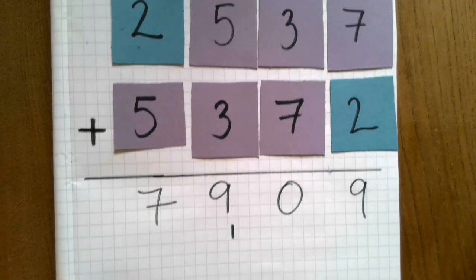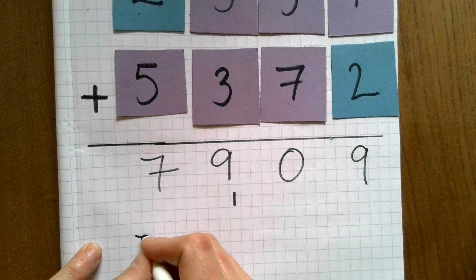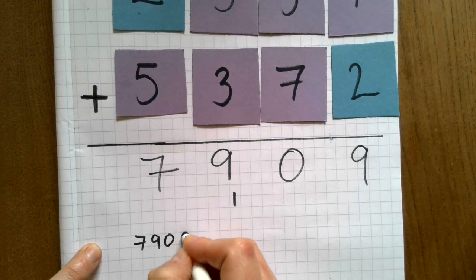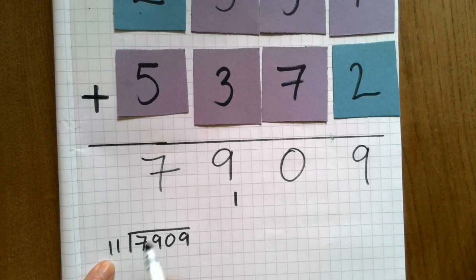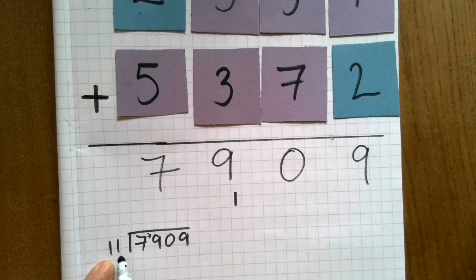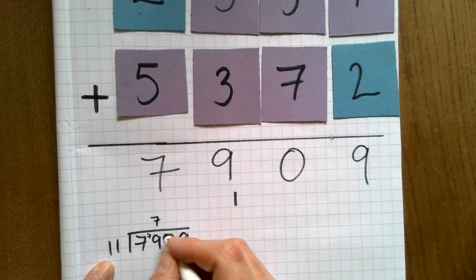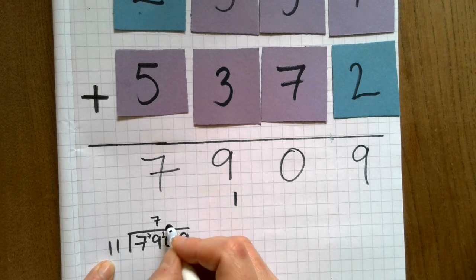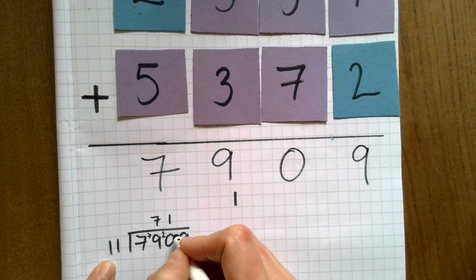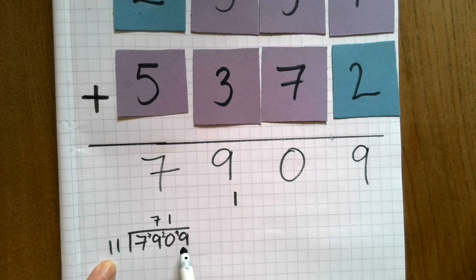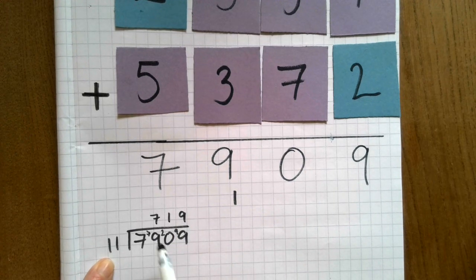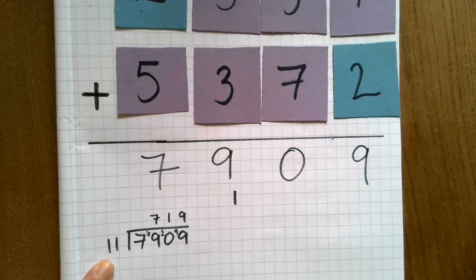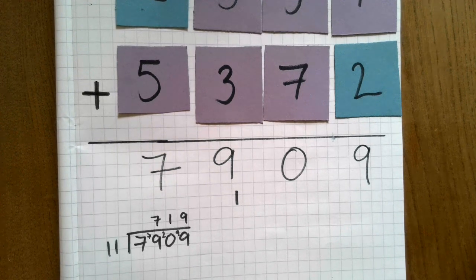It doesn't go into 7, so I'll carry the 7. Goes 7 times into 79 and there's 2 left over. Goes once into 20 and there's 9 left over. And it goes 9 times exactly into 99. So 7909 divided by 11 is 719 exactly.